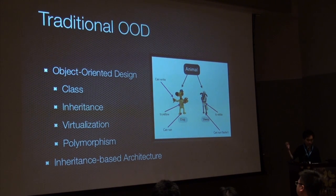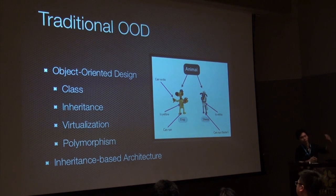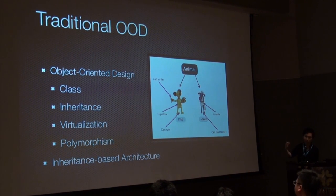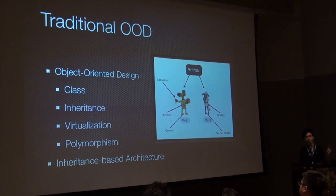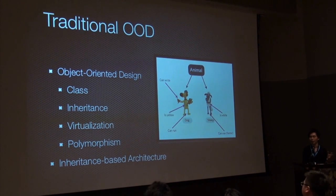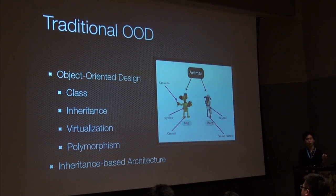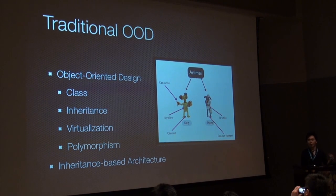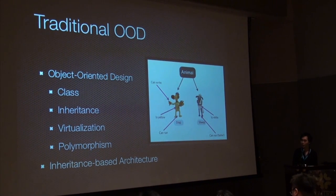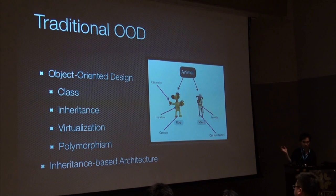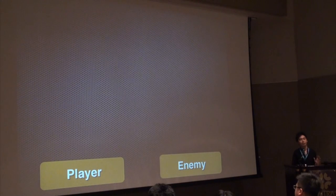一般的物件導向式就是你要有Class，每個東西是一個類別，然後你可能會有繼承體系，會有虛擬、有多型，通常這種東西的話我們會把它叫做是以繼承體系為主的架構，就是Inheritance-based。繼承體系就像如果你爸是王永慶，繼承下來你可能就有很多優勢，但你的繼承體系的優勢跟劣勢都會一併地繼承下來。